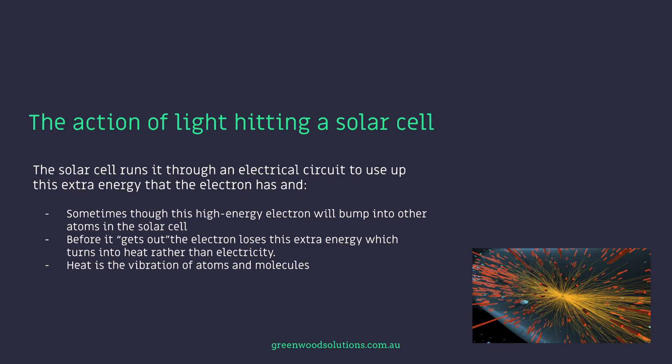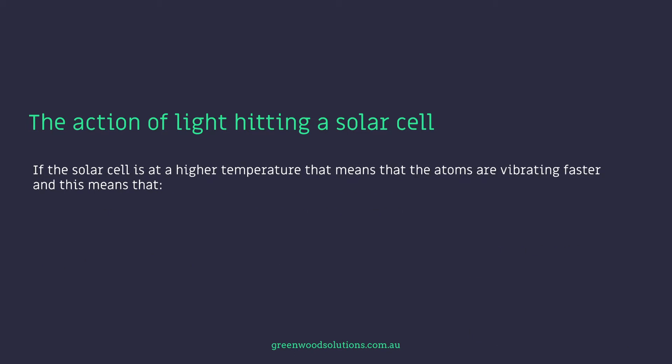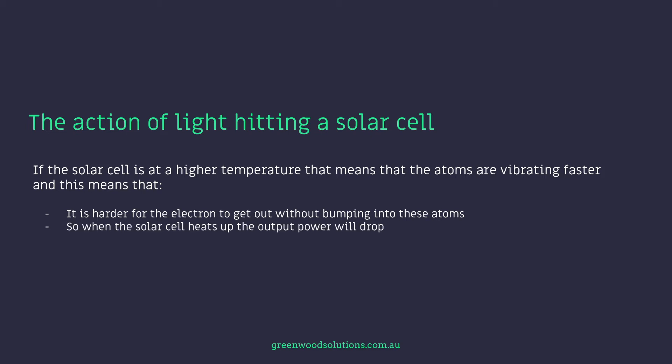Heat is the vibration of atoms and molecules. If the solar cell is at a higher temperature, the atoms are vibrating faster, and this means it is harder for the electron to get out without bumping into these atoms. So when the solar cell heats up the output power will drop because more of the energy is lost before it manages to escape the solar cell.